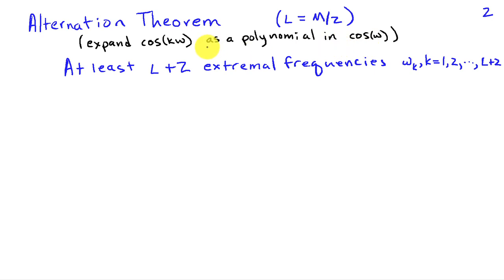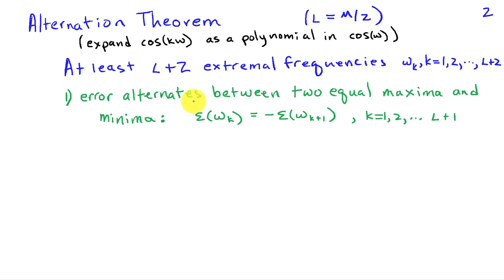And what the alternation theorem says is that there are at least L plus 2 extremal frequencies for this L-th order polynomial. And we'll let those frequencies be denoted by omega sub K where K goes from 1 to L plus 2. And at those extremal frequencies, we have the following properties.